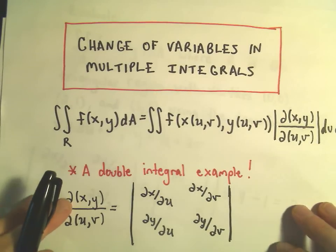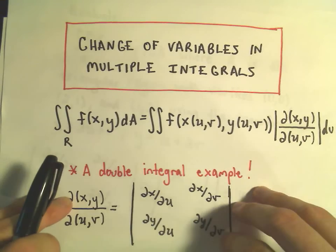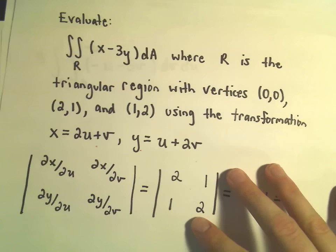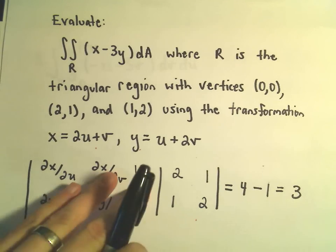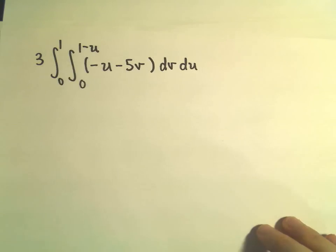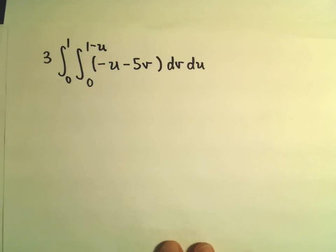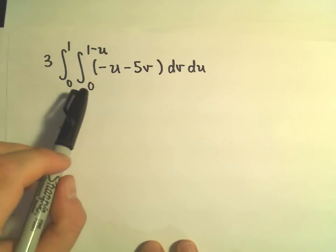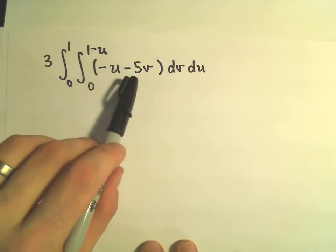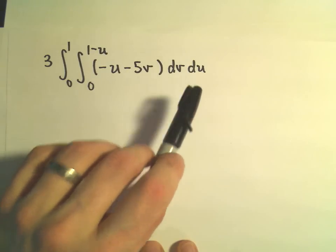All right, this is going to be part two of our change of variables, in this case using a double integral. So we had set up this original problem, did quite a bit of work in the first part, but eventually we turned that all into this double integral of three times from zero to one and then zero to one minus u of negative u minus 5v dv du.